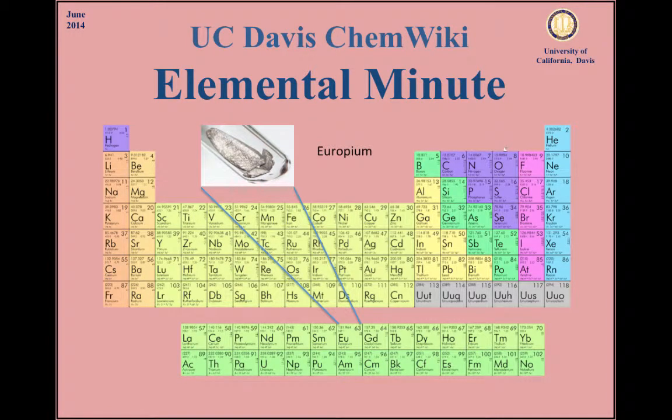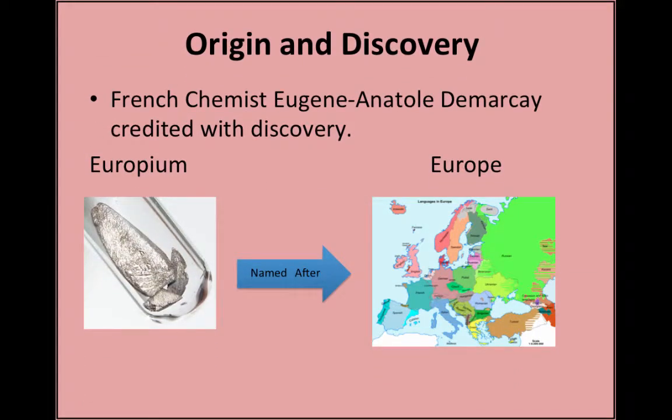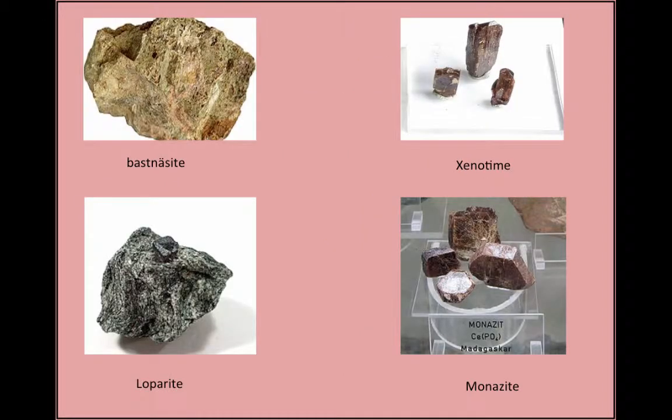The rare earth element europium is part of the lanthanide series and was named after the continent of Europe by French chemist Eugène Anatole de Marc. Europium is not found in nature as a free element but is found in certain minerals.